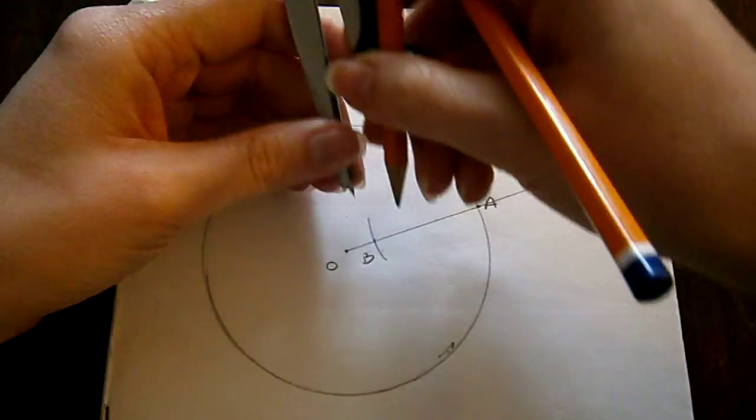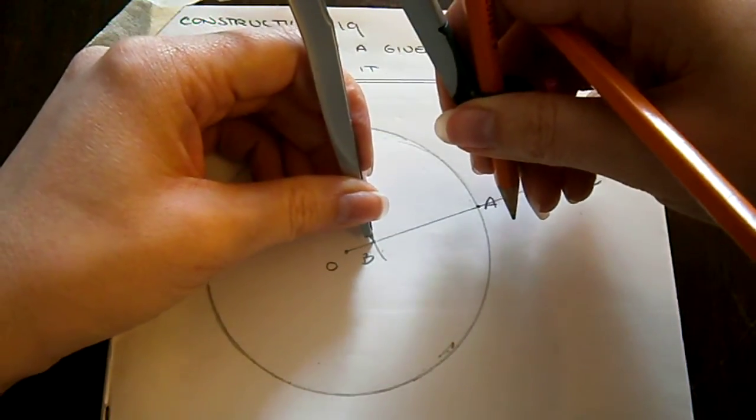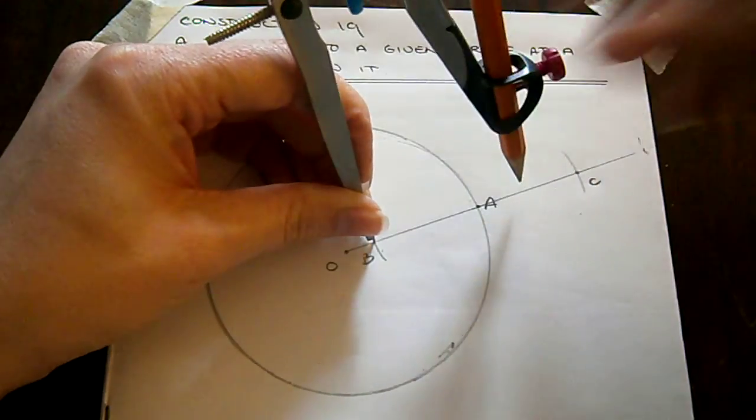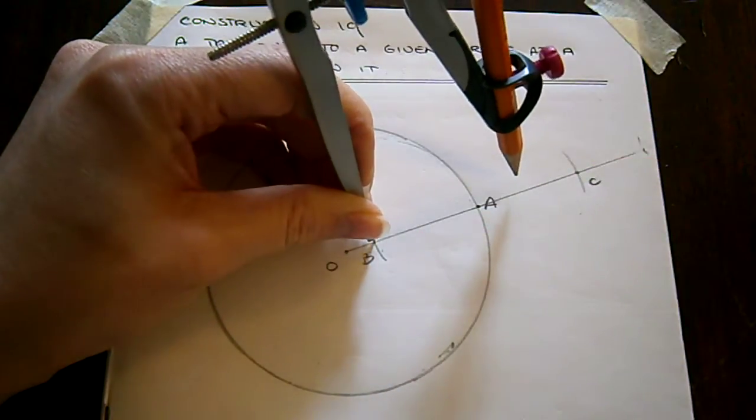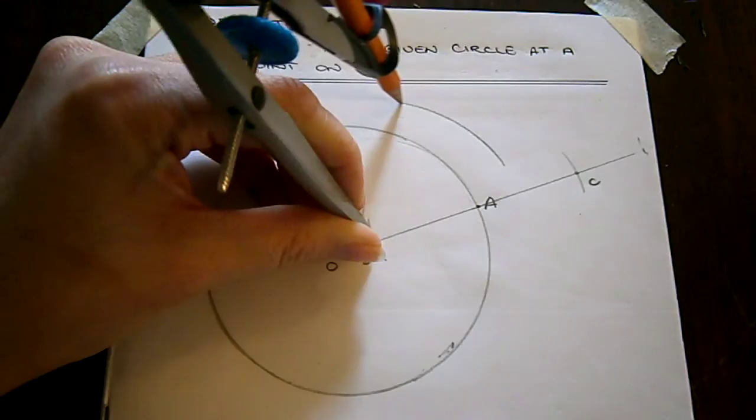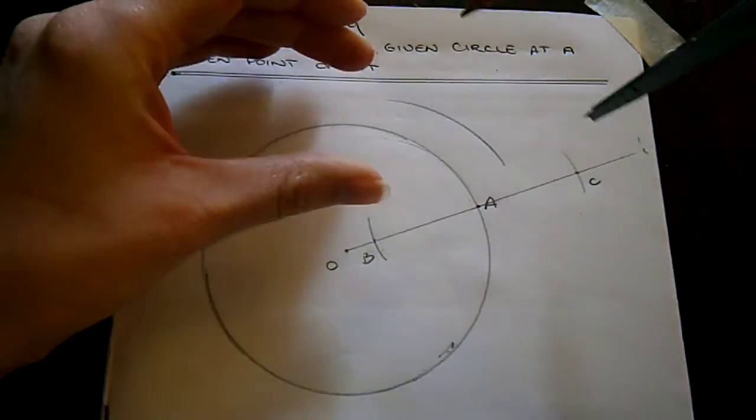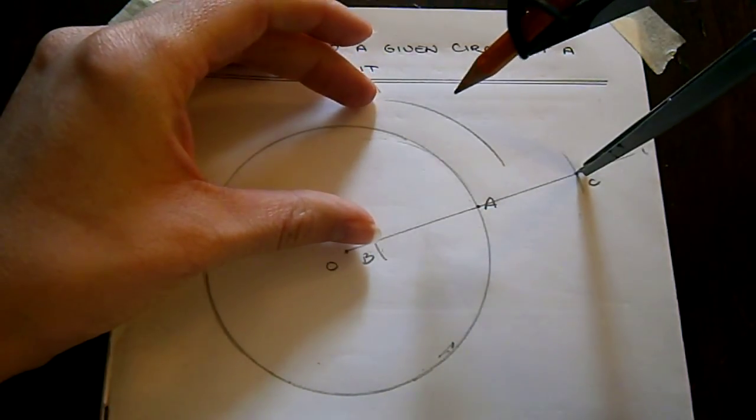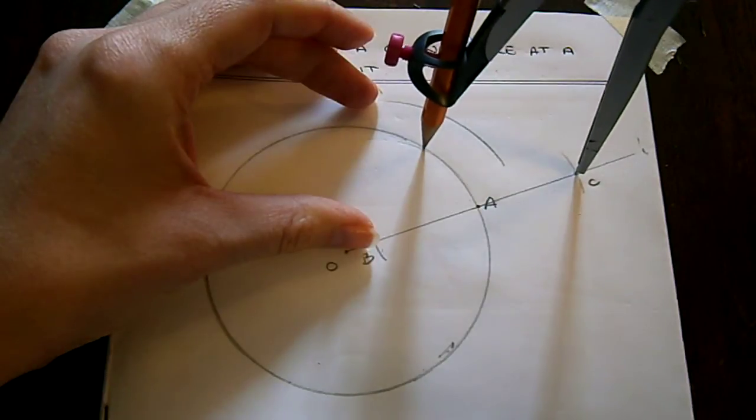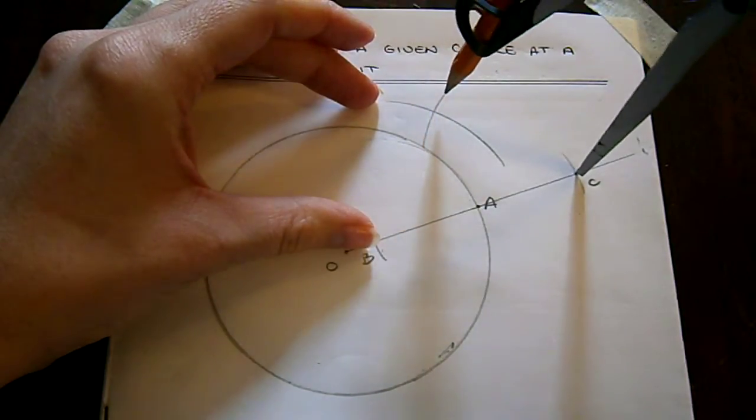Now, taking your compass, place the point on B and extend it so that it is greater than the length from B to A. Draw an arc. Keep the compass the same width and draw an arc from C.